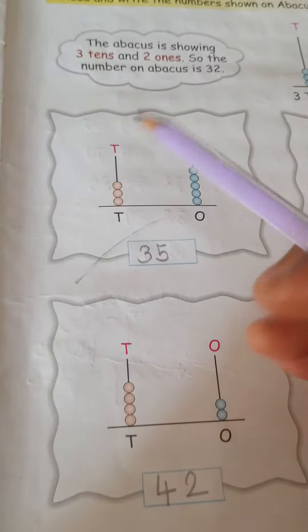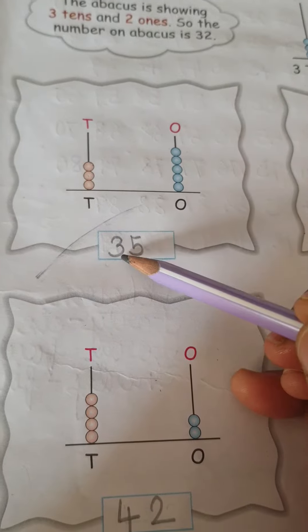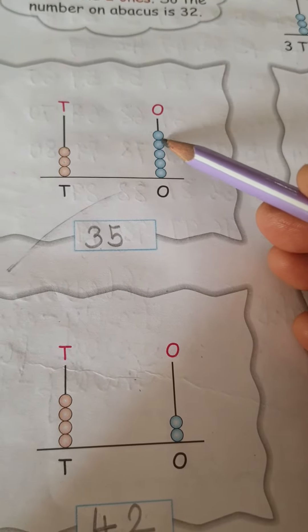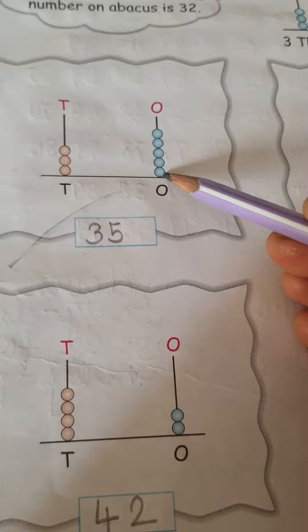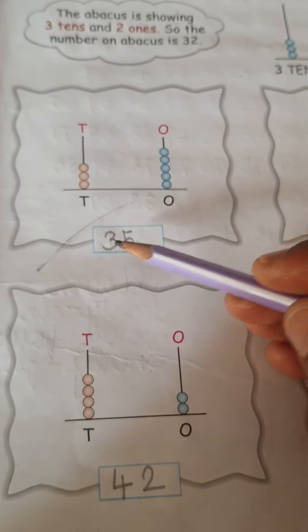Like this, you have to count. 1, 2, 3, write here 3. Then 1, 2, 3, 4, 5, write here 5. So the number is 35.